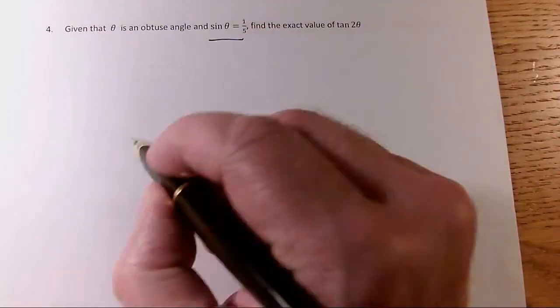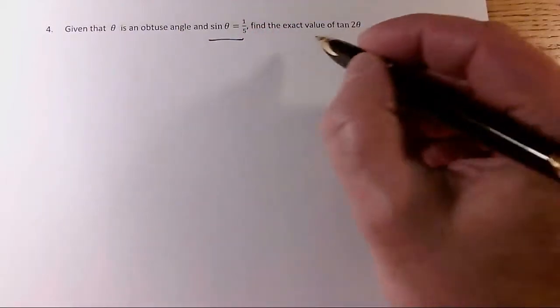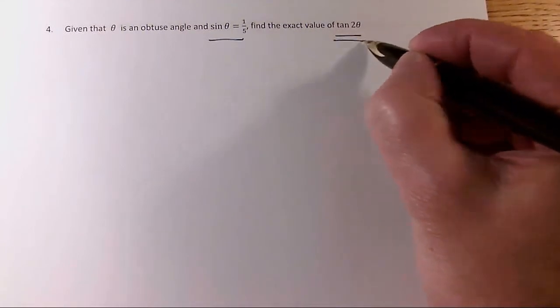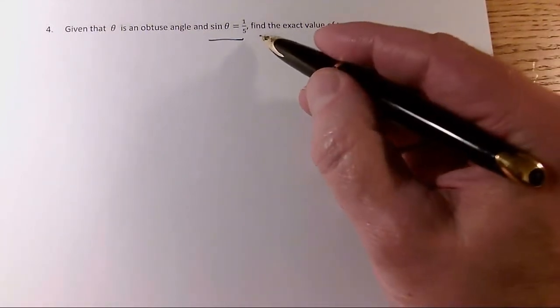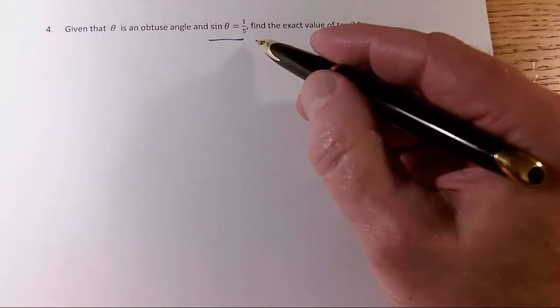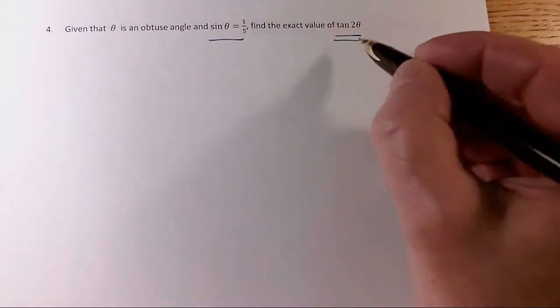In this question, I start by knowing the exact value of sin θ, and I need the exact value of tan 2θ. I need to use an exact method, so I can't arc sine that. That would be ridiculous. What I can do is firstly start with tan 2θ.